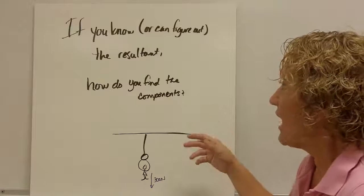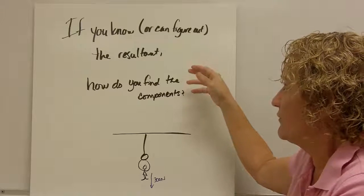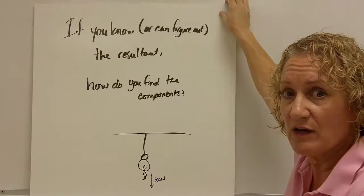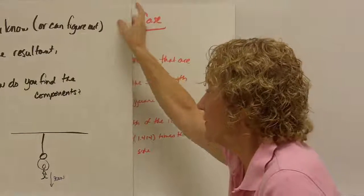So now we know how to find, excuse me, how to find the components if we have the resultant. There's two special cases. Two shortcuts if you will that will make things a little bit easier for you. Here's the first one.